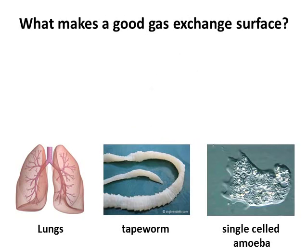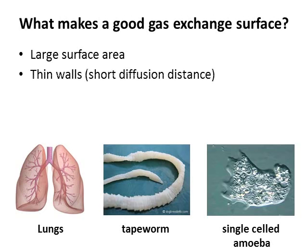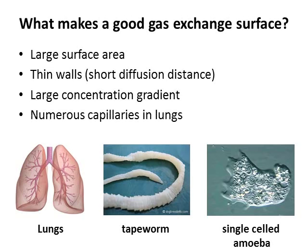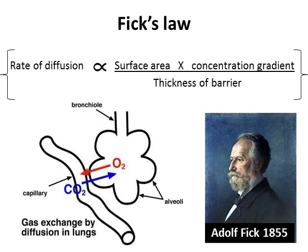The answers are: first of all, a large surface area; thin walls, so not very far for oxygen and carbon dioxide to diffuse across; a large concentration gradient; and numerous capillaries in the gas exchange system like the lungs. Hopefully you remembered back to the diffusion topic and were able to use Fick's Law to help you work out what makes a good exchange surface.